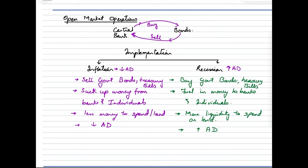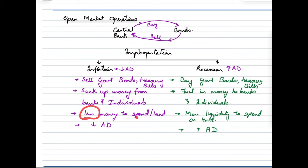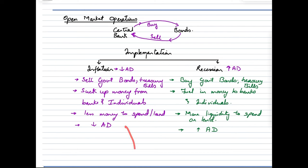The next tool is open market operations (OMO). Under OMO, the central bank either buys or sells bonds, treasury bills, or government securities. During inflation, the central bank focuses on bringing down aggregate demand, so it sells bonds or government treasuries. Once the central bank sells bonds and treasury bills, it sucks up money from banks and individuals — the central bank gives bonds and takes money in return. This leaves banks and people with less money to spend or lend, reducing aggregate demand and shifting the aggregate demand curve to the left.